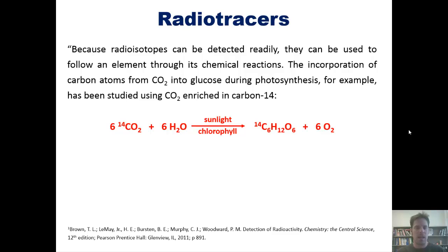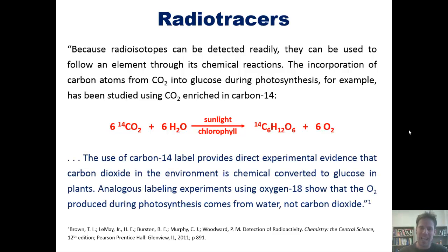That tells us, then, that the carbon atoms that are incorporated in a plant into glucose and the polymers that it makes therefrom arise from metabolizing CO2. And all of this was able to be seen experimentally by labeling the CO2 with C-14 instead of your typical C-12. So, the use of carbon-14 label provides direct experimental evidence that carbon dioxide in the environment is chemically converted to glucose in plants.